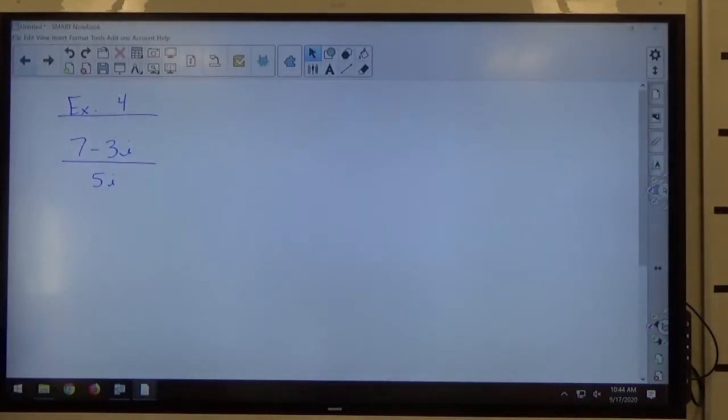Alright, so second day of chapter 2-4, we're trying to rewrite complex numbers in the most simple form possible. And what you're going to see here is 7 minus 3i over 5i.